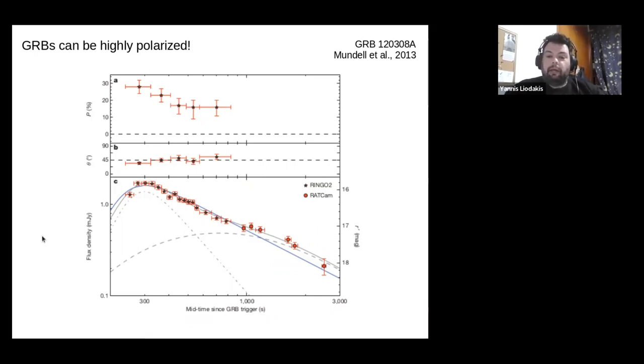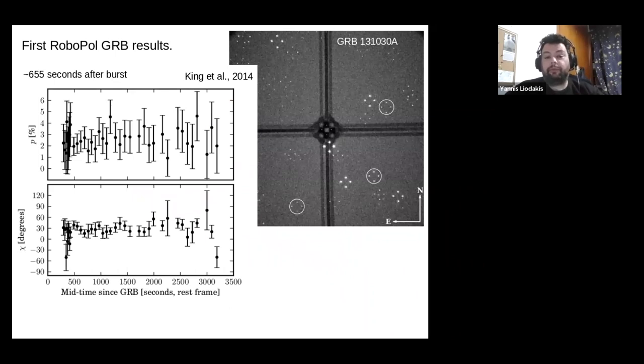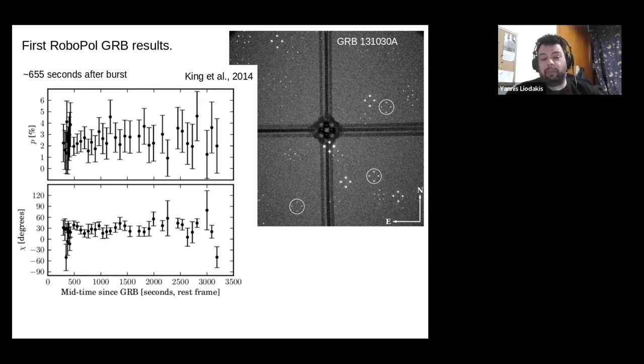Of course, not all GRBs are polarized. And of course, they show very different behavior. So just a year later, we observed our very first GRB with RoboPol. At similar timescales, it was fairly close to the burst. And we saw a very different behavior. So we now see very low degree of polarization, about 2 percent, which is constant. And as it turns out, this is most likely coming from the dust in our galaxy. This is what we call interstellar polarization. So basically, the GRB was less than 2 percent polarized in this case.